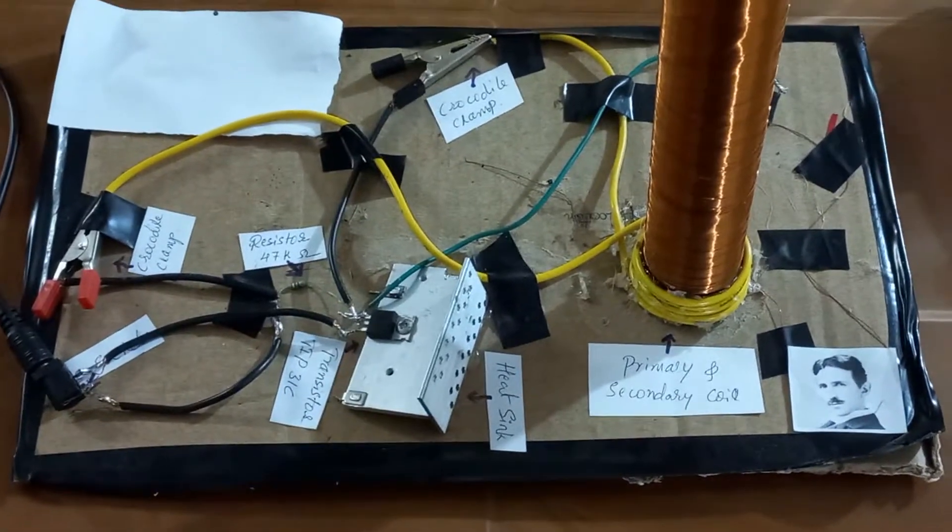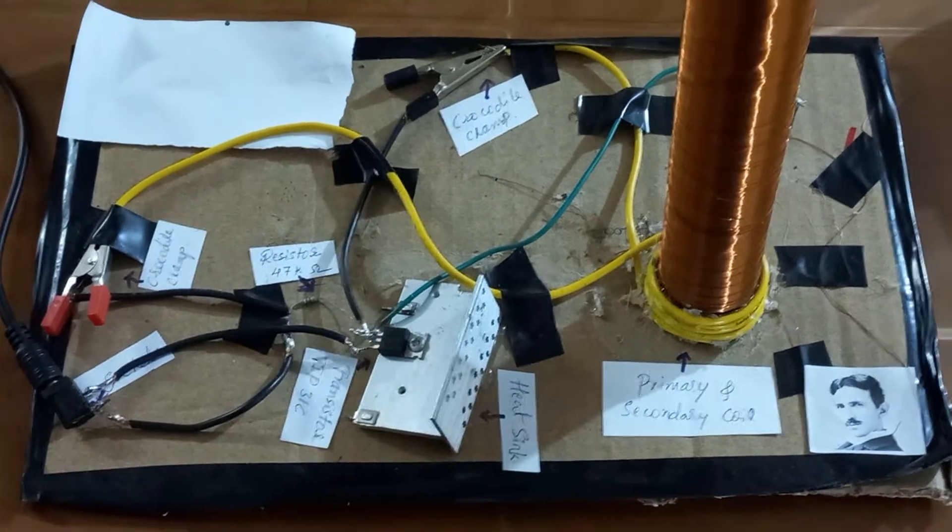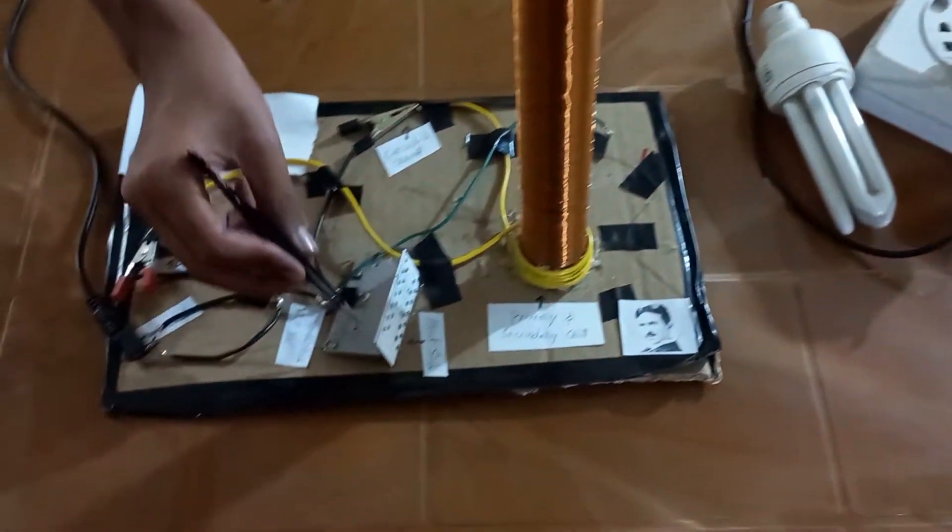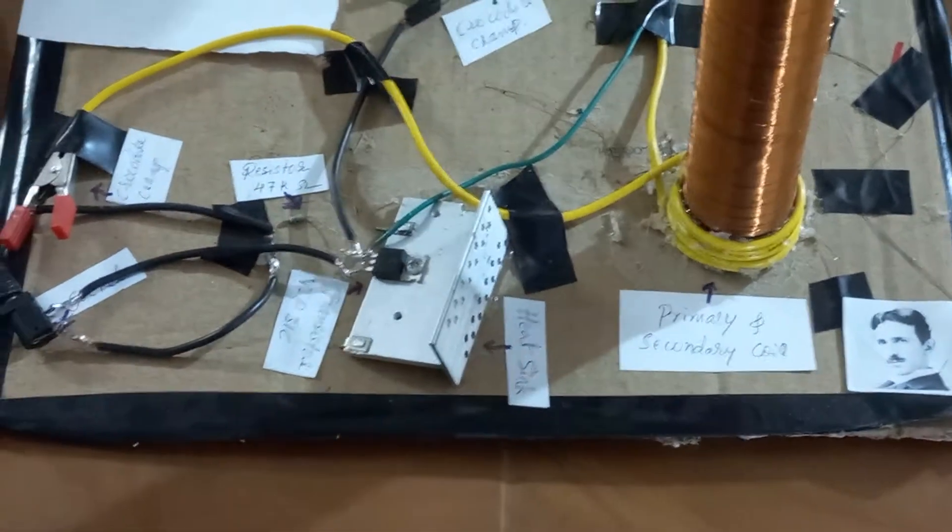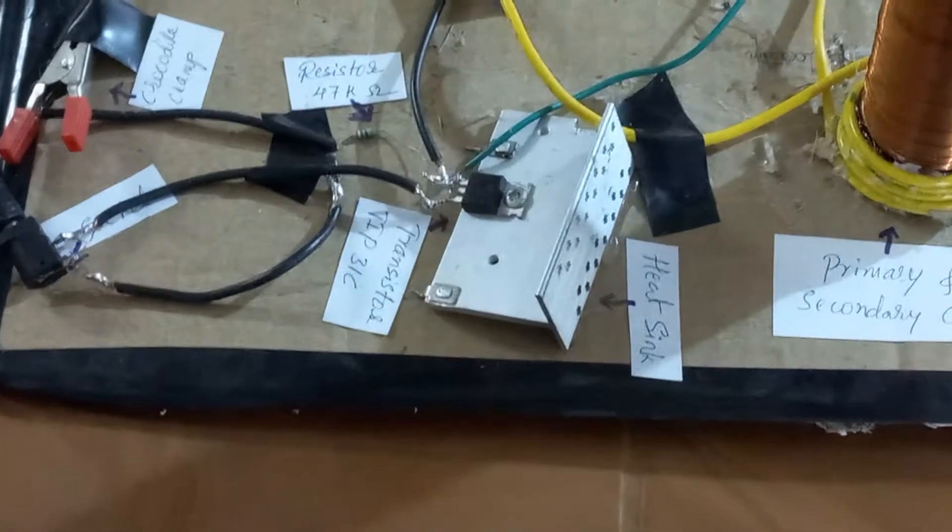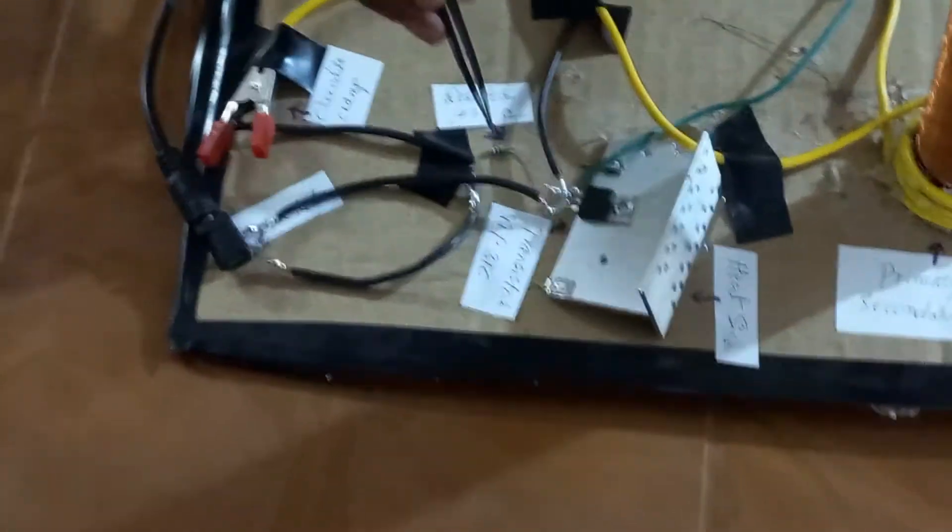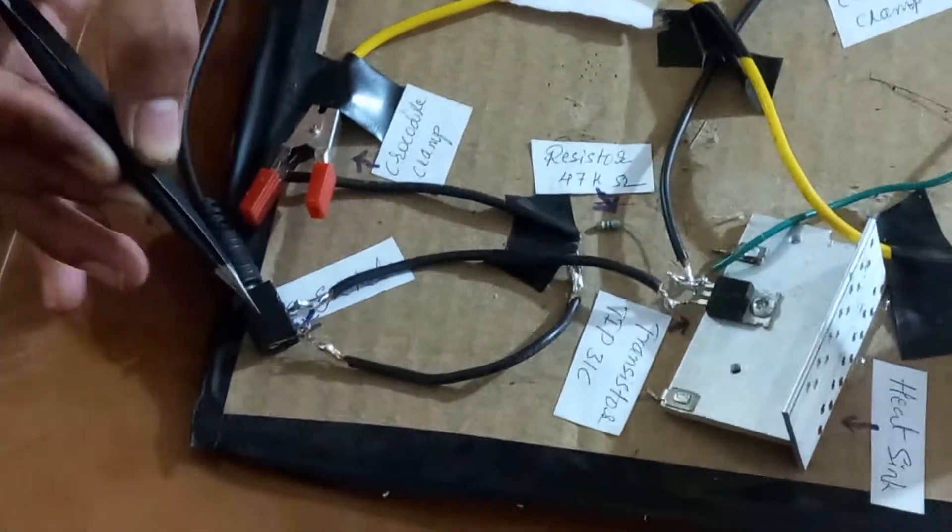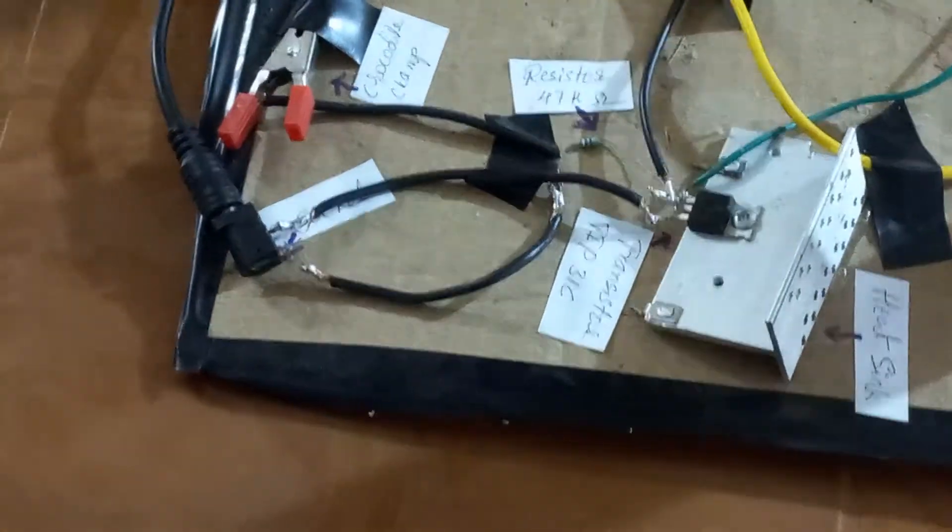Let me explain this circuit diagram. Here we have a primary coil and a secondary coil and we also have a heat sink for the transistor. The transistor name is TIP31C which acts like a switch in this circuit and we have a 47 kilo ohm resistor and then we have our DC input socket and few crocodile clamps.